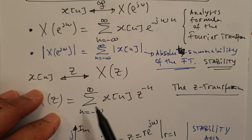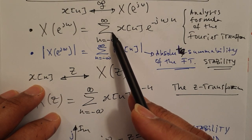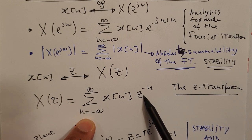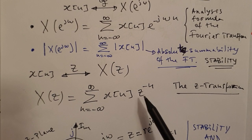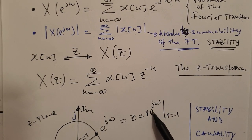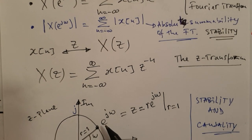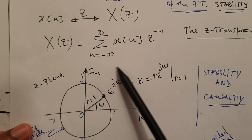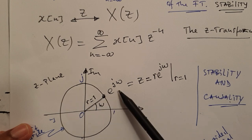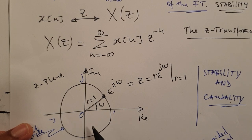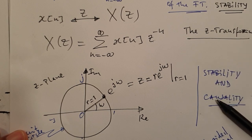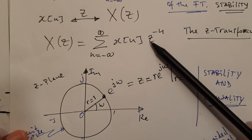Now what we'll do is extend this result of the Fourier transform to a situation where we are calculating the sum as a function of z, where z is defined as r times e to the j omega. This basically means that instead of being constrained to be on the unit circle, we are now evaluating what happens in the whole z-plane. We can be inside the unit circle, outside, or even on the unit circle itself. This will allow us to combine the analysis of stability and causality with one transformation: the Z-transform.